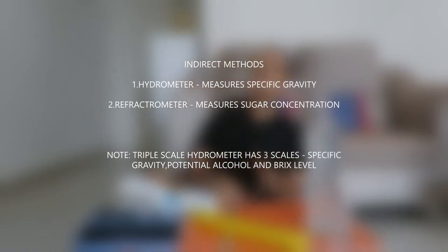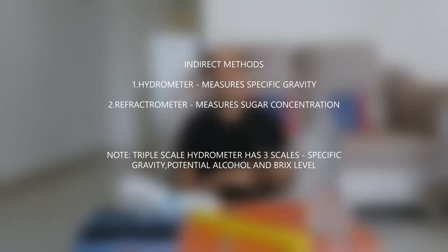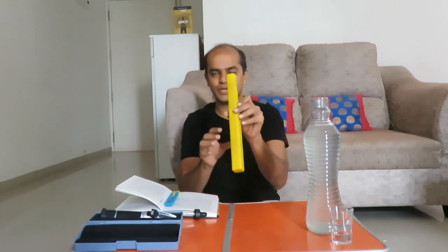Since home brewers don't have that luxury, we are going to talk about the indirect method. It is called indirect because rather than measuring the percentage of alcohol in the final product, we observe how your beverage changed during the fermentation process from start to finish, and estimate how much sugar was converted into alcohol. There are two widely used methods: the hydrometer and the Brix refractometer.